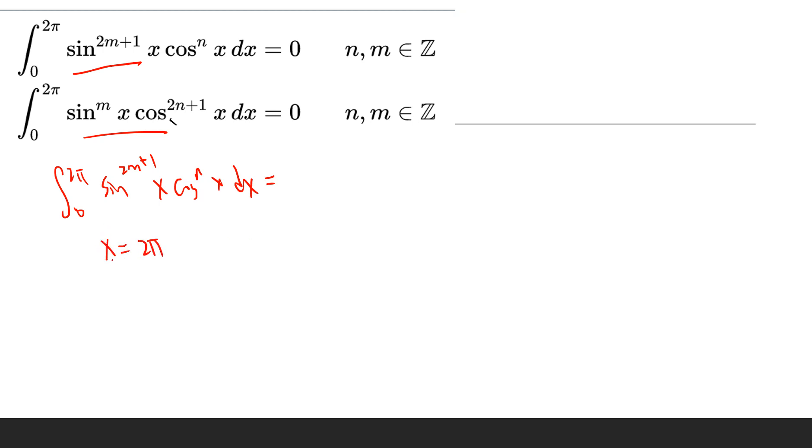Basically it's the same as x equals π minus y. So this is sine 2n plus 1 times π minus y, cosine π minus y, and negative dy. So the bounds become negative π.